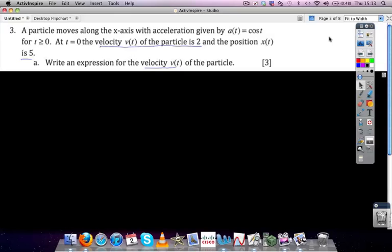Okay, so this is from the integral calculus test number 3, and it's kinematics problems. We're looking at a particle moving along an x-axis with some acceleration given by cos t for positive values of time, such that when t is 0, the velocity of the particle is 2, that's important, and the position is 5.